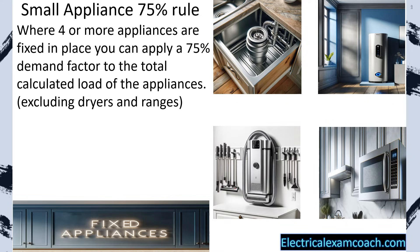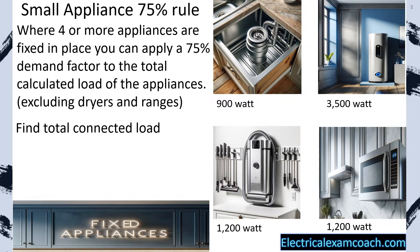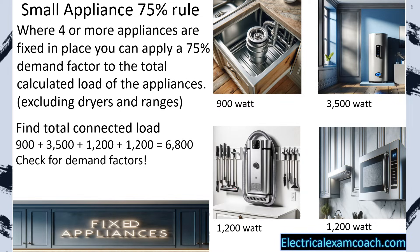We're going to learn how to calculate dryers and ranges separately later in the program. So let's imagine that we have these appliances. The question is, how do we calculate them all together to turn it into amps and size our service, which sizes our wire and our pipe? First, we find our total connected load — we total all these up, and that equals 6,800. Then we check for demand factors. Step one in all load calculations is to get the total connected load, then check for demand factors. In this case, we can apply the four-or-more 75% rule. We take 6,800 multiplied by 0.75, and that gives us a new reduced load of 5,100 watts, which is what we would add to our whole home load calculation.